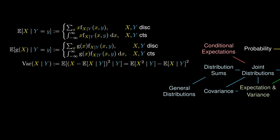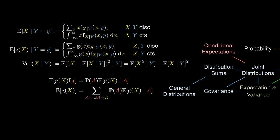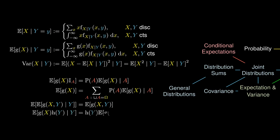This leads us to many conditional expectation properties, with the most useful being the Tower Rule — the expectation of a conditional expectation is just the vanilla expectation itself. Furthermore, we can sometimes factorize conditional expectations, and decompose the unconditional variance in terms of conditional variance and conditional expectation.